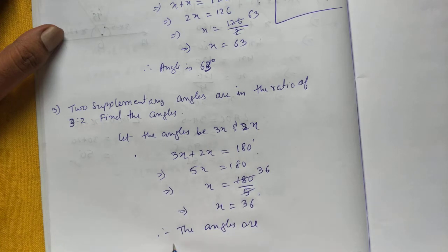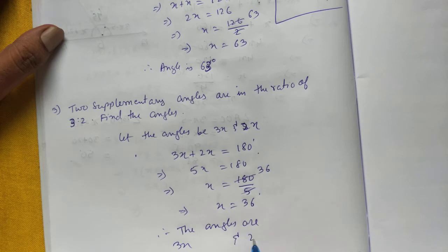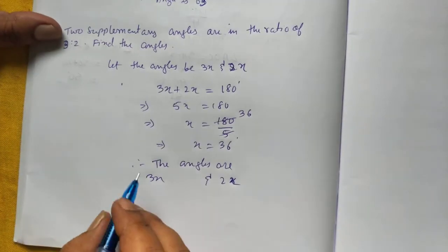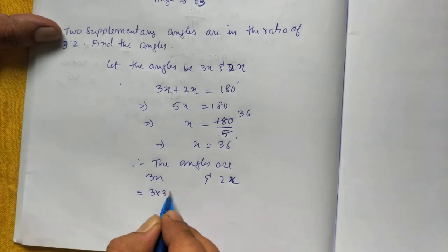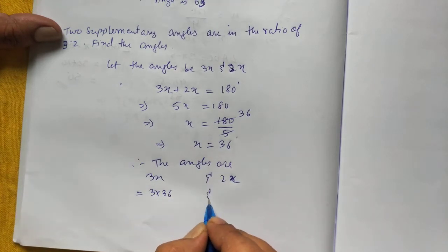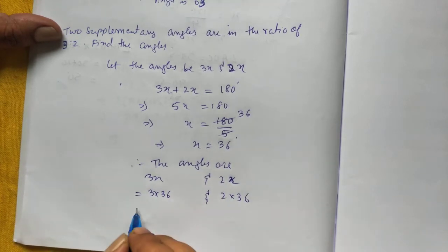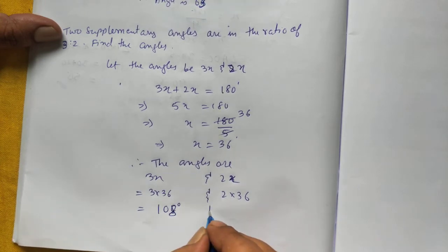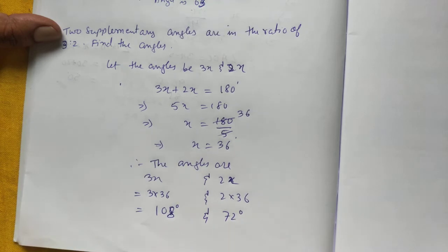Now we can find, therefore the angles are 3X and 2X. We will put the value and find the answer. 3X means 3 into 36 and 2X means 2 into 36. It will be 108 and this will be 72 degrees.